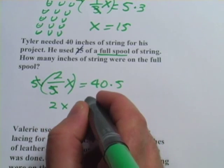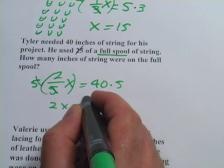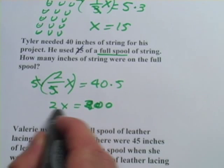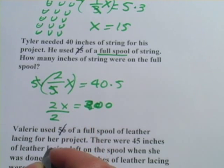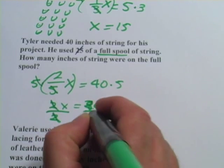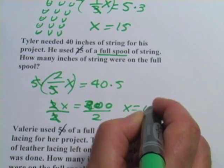And then I can divide by 2 because that 2 is multiplied by the X. Those cancel. I have to divide this by 2 as well. And X equals 100.